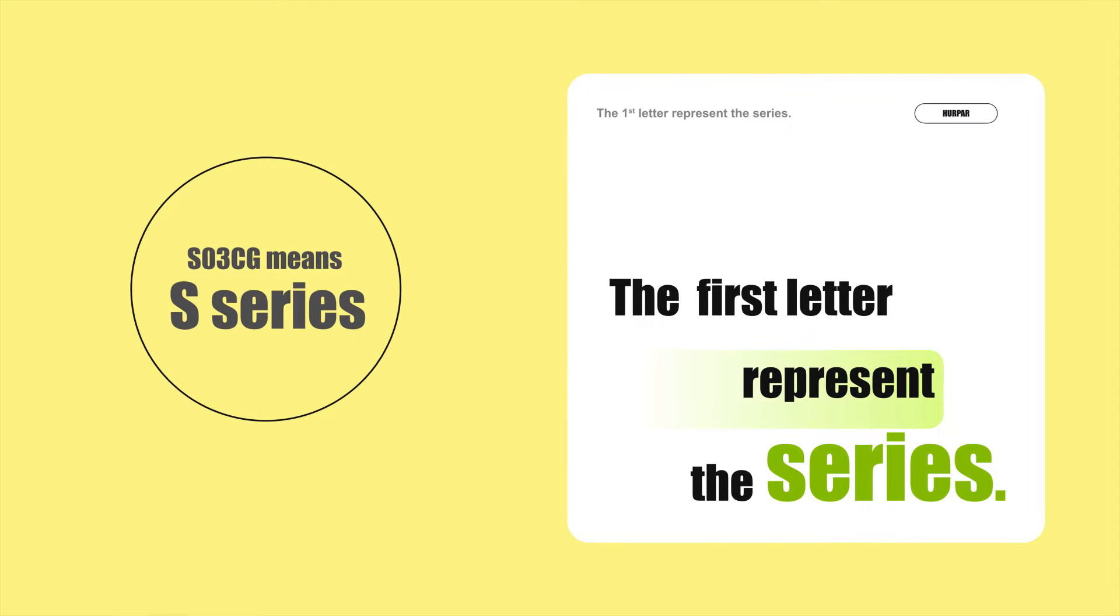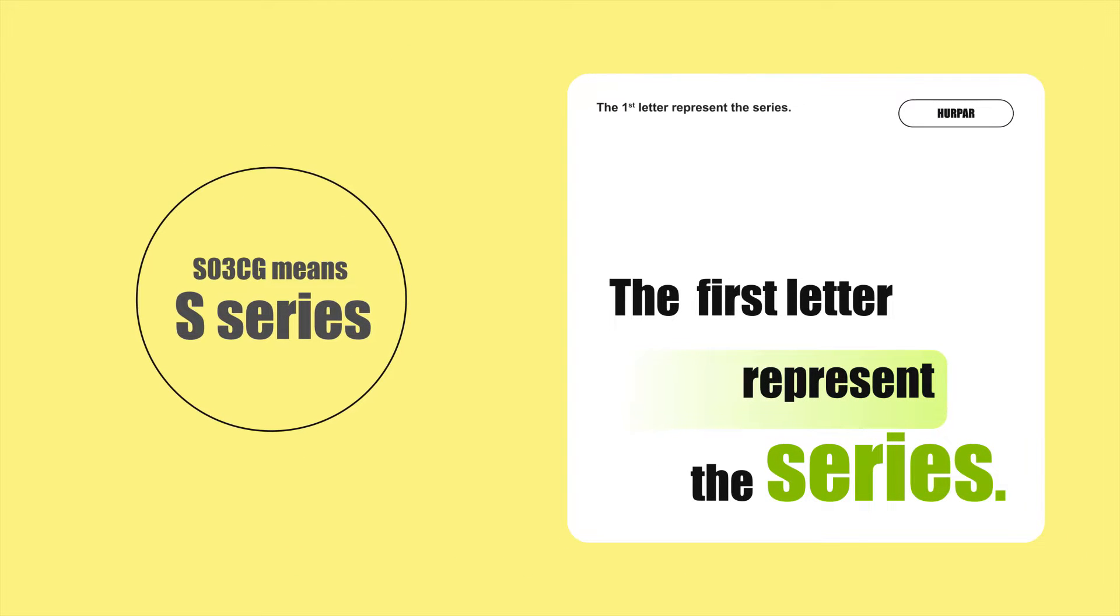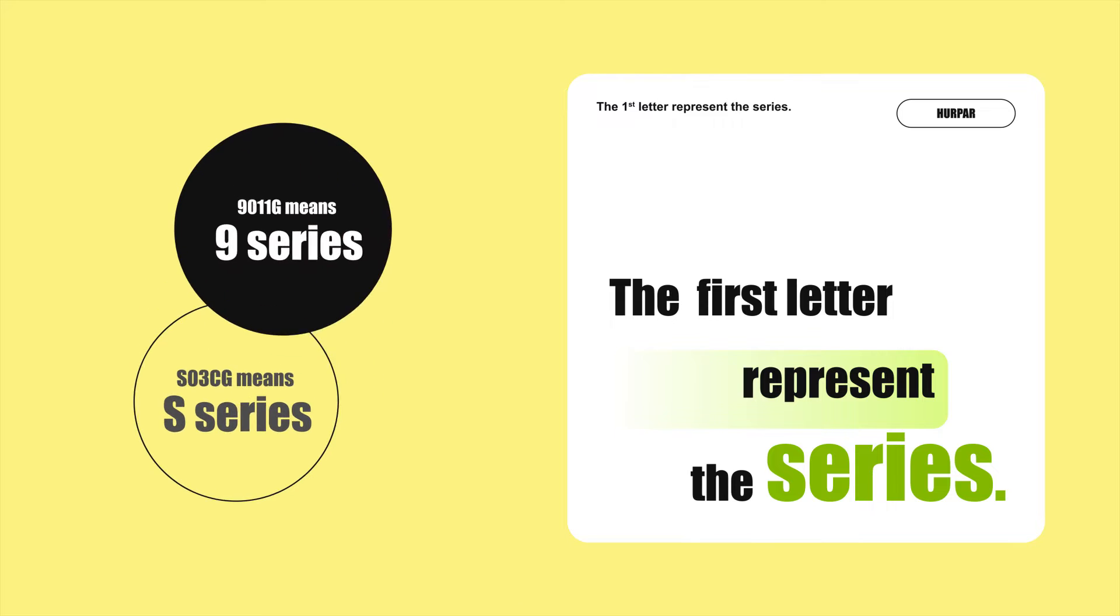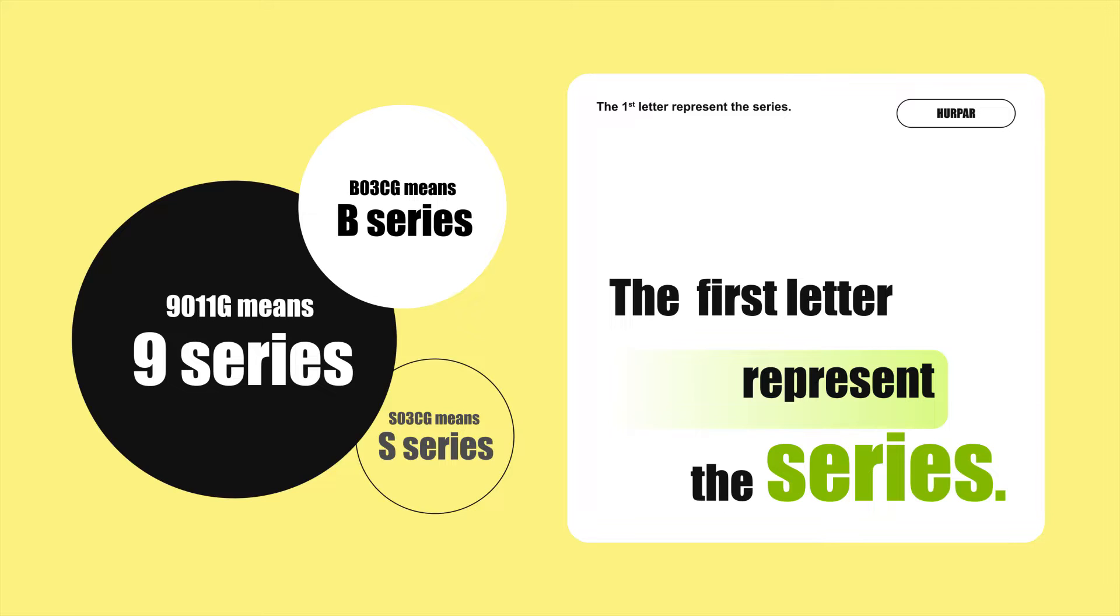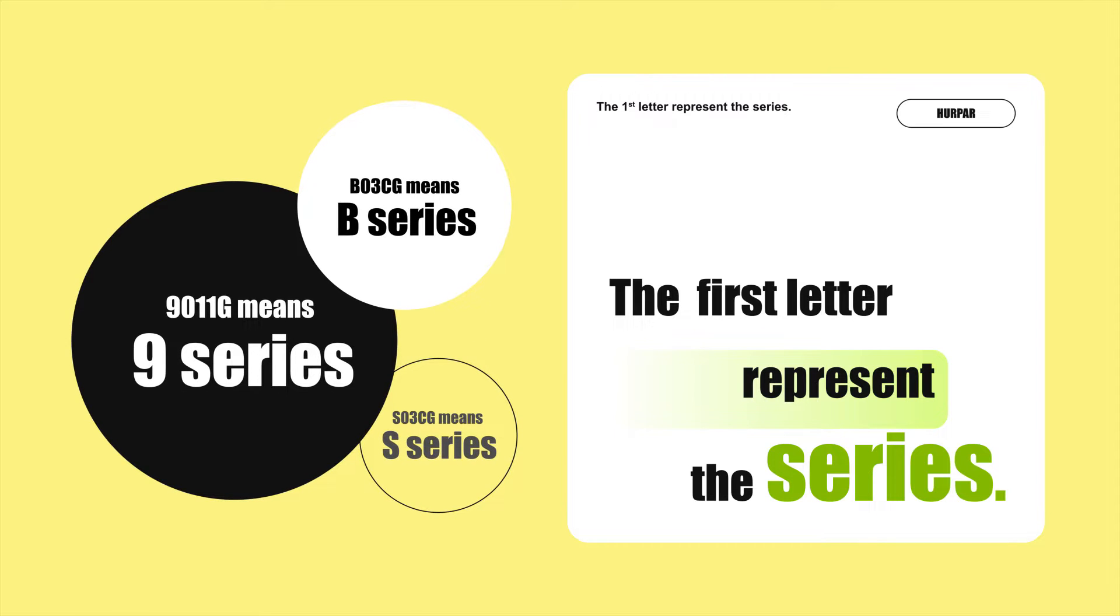For example, S from SO3CG means S series, 9 from 9T11G means 9 series, and B from BO3CG means B series.